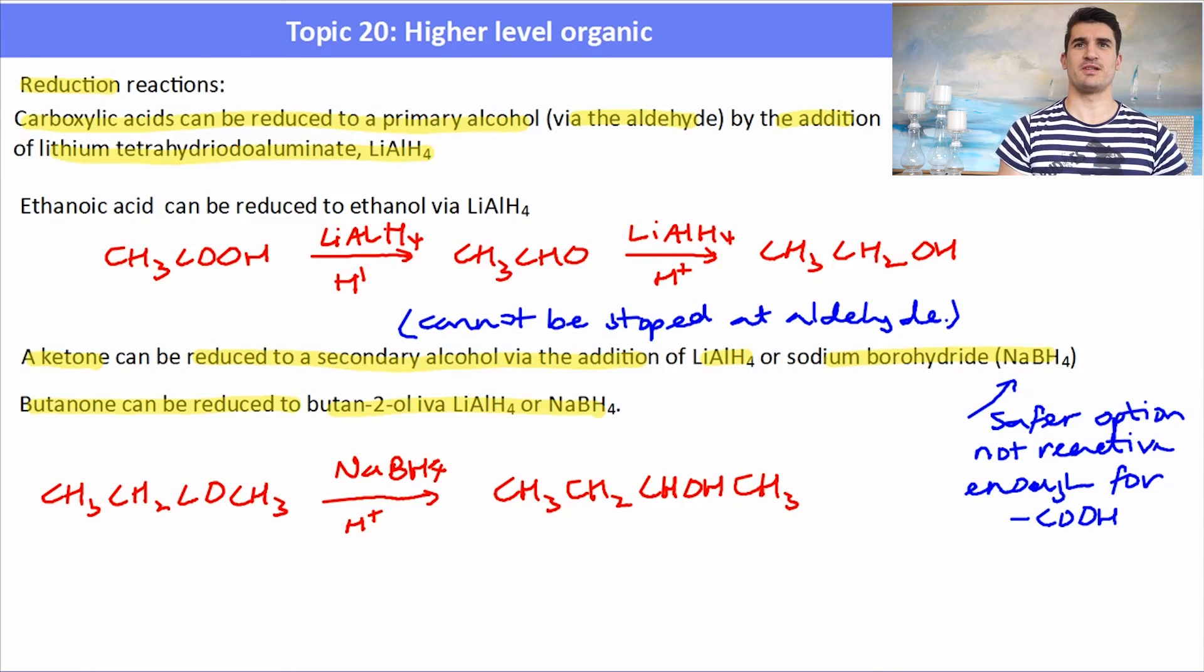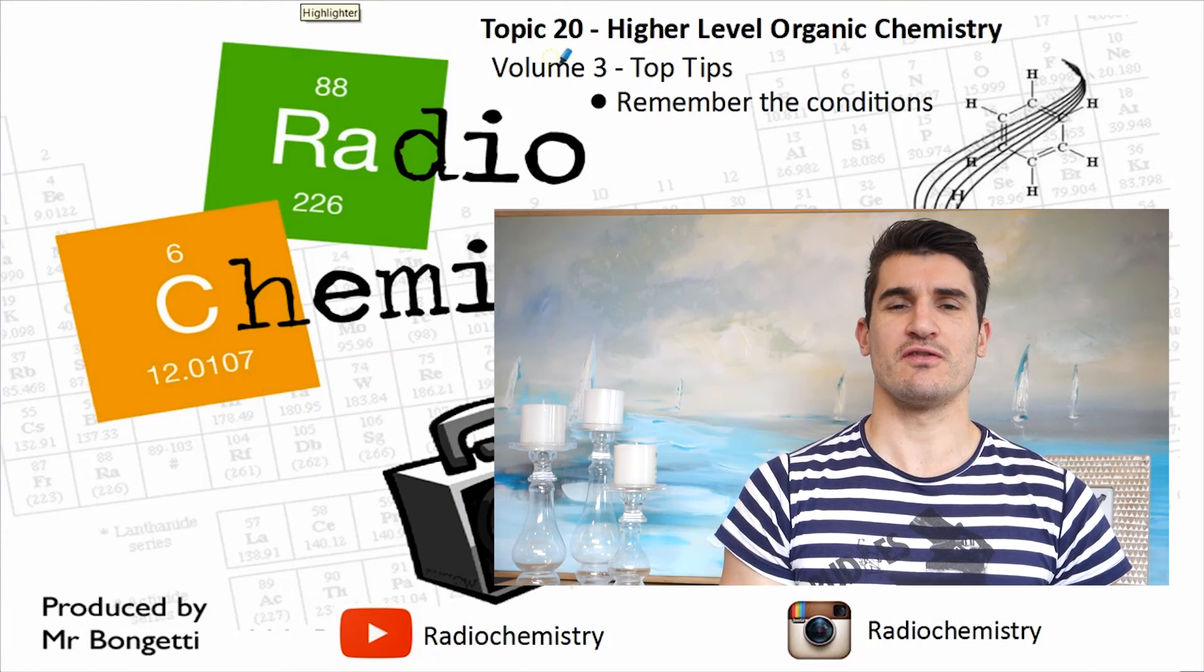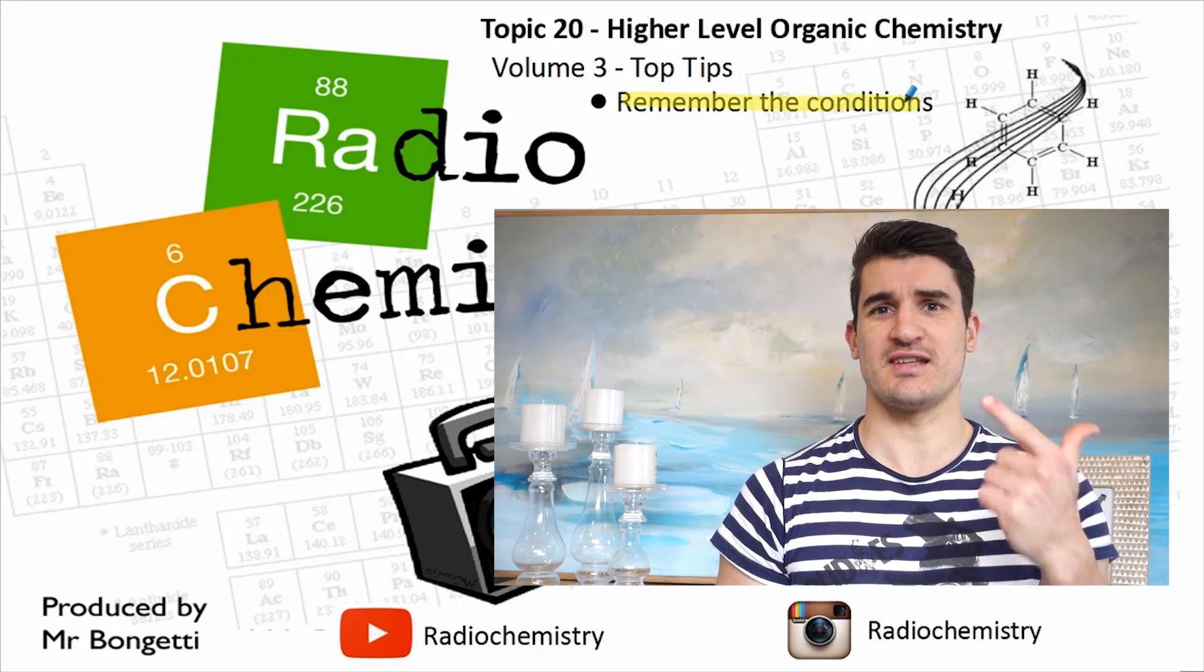Volume three, some top tips. Just remember the conditions for this one: the electrophilic substitution of a benzene ring and then the reduction reactions for the acids and the ketones. Thanks for watching guys. Don't forget, drop a like on the video, subscribe for more, and I'll see you next time.